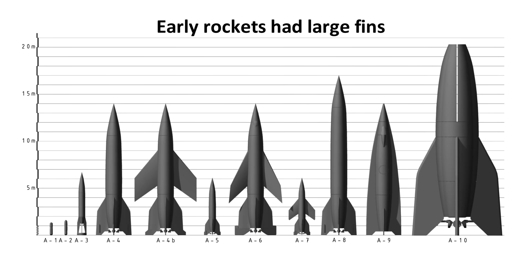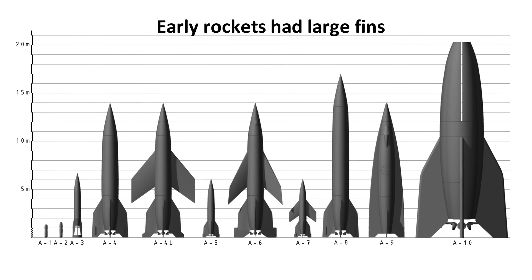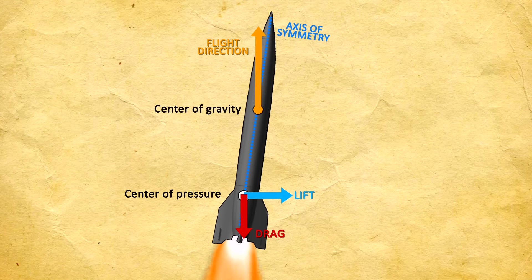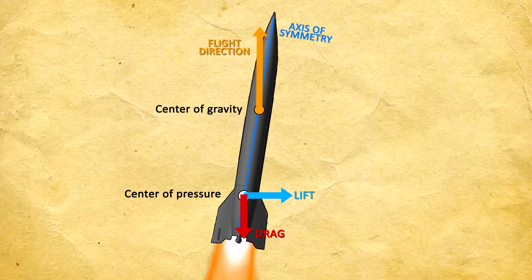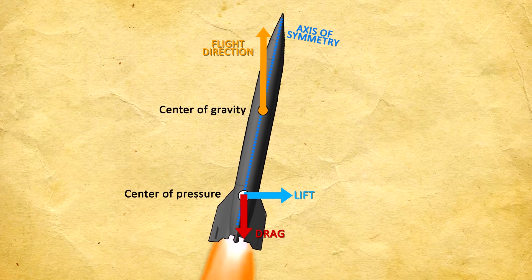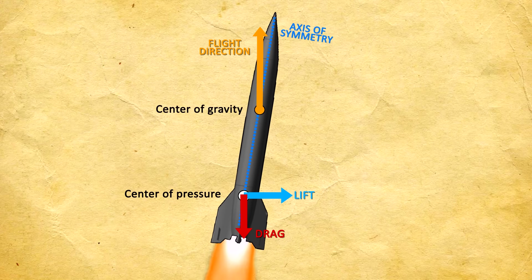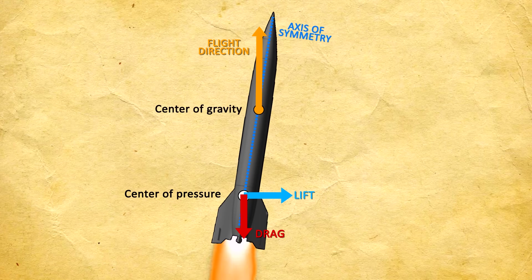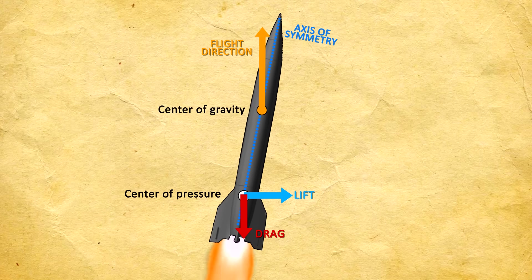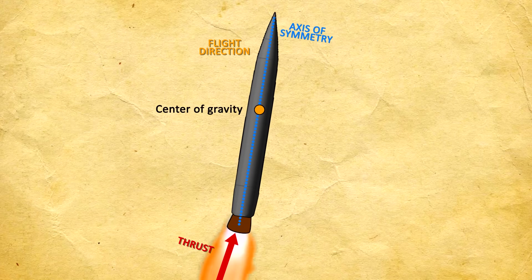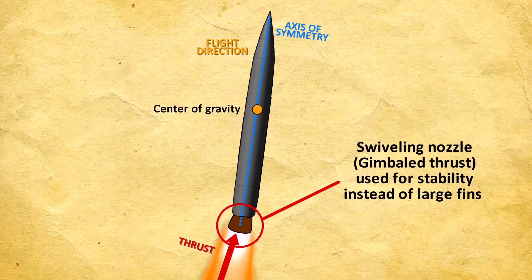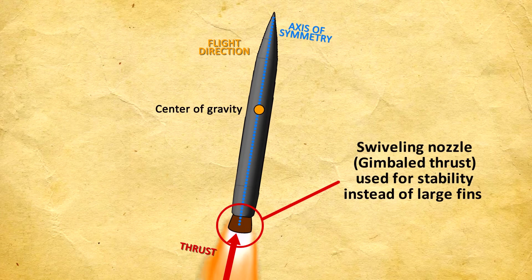Maintaining stable, straight flight is an issue. Early rockets were stabilized by large fins. For stable flight, the center of pressure where the net aerodynamic force acts must be lower than the center of gravity — so if the angle of attack changes, the net force acting below the center of gravity can restore stability and realign the nose. Modern rockets don't use fins because of the extra weight and aerodynamic drag they cause. Instead, stability comes from swiveling the thrust nozzle, a technique called gimballed thrust.